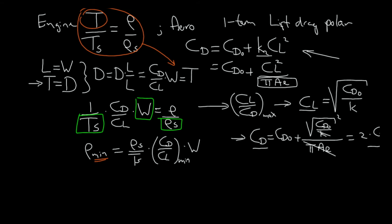But we are not just interested in the aerodynamics, we are interested in finding the minimum air density. And this is air density at the stratosphere divided by thrust at the stratosphere times CD, and we know this is 2 times CD0 divided by CL which we already calculated right here, which is the square root of CD0.